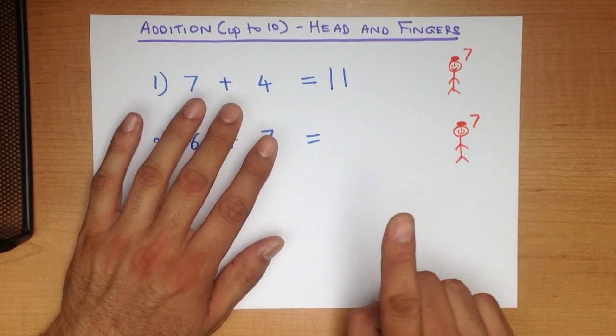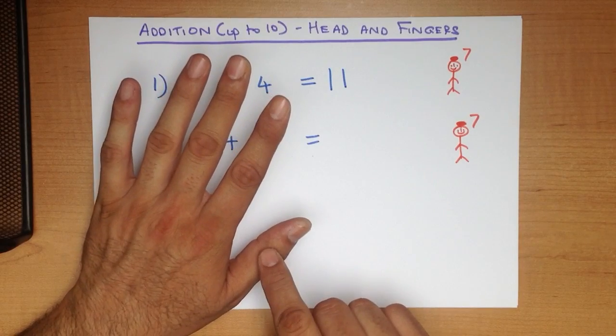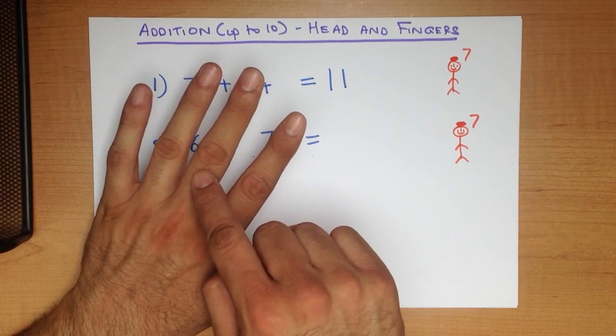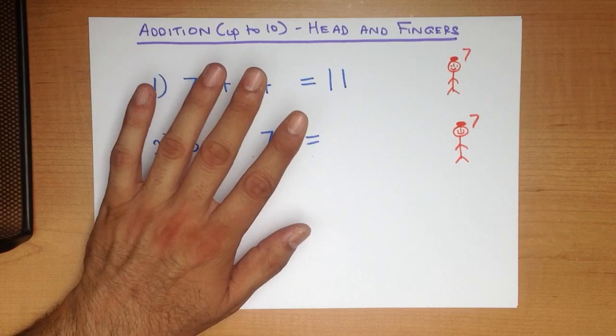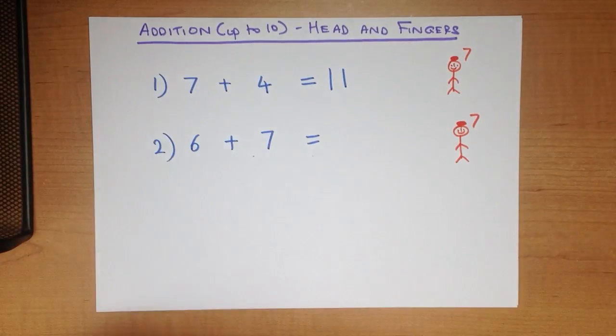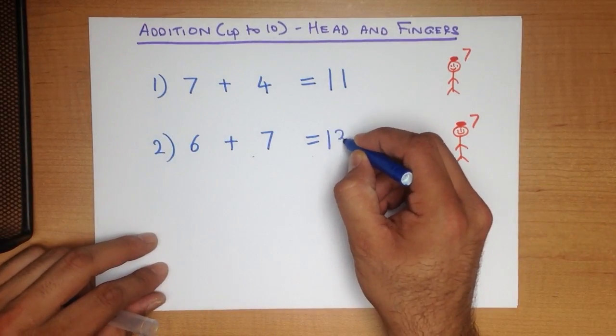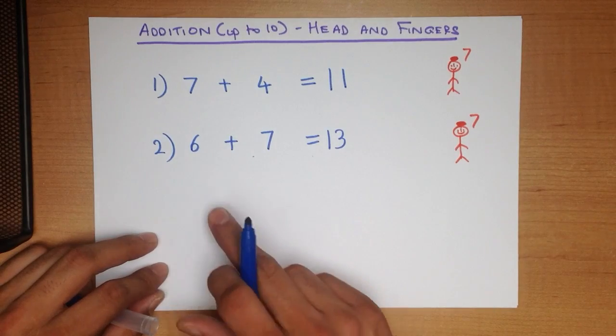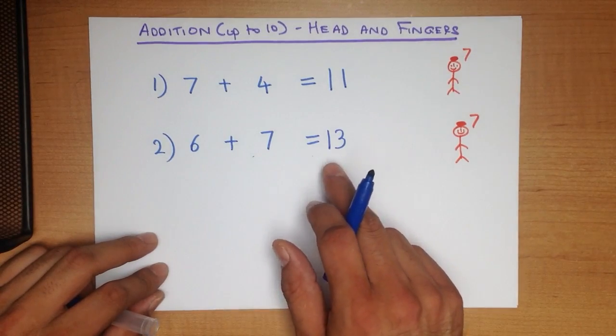So we start with 7, 8, 9, 10, 11, 12, 13. And that is our answer. 6 plus 7 equals 13.